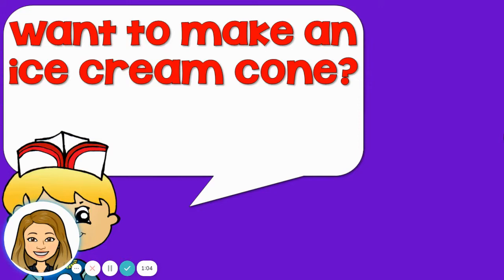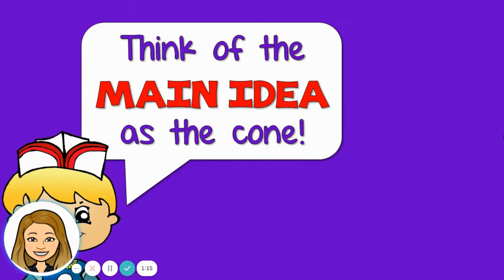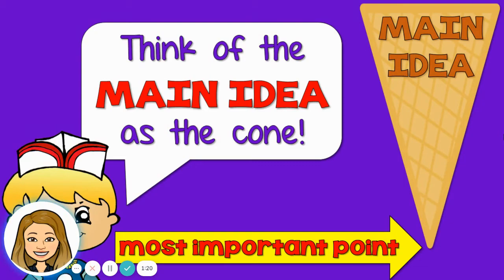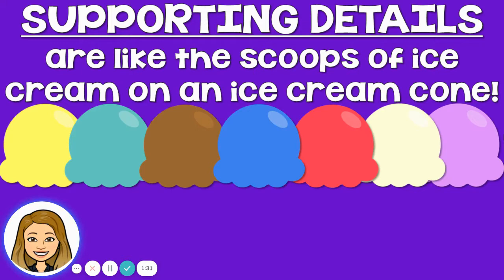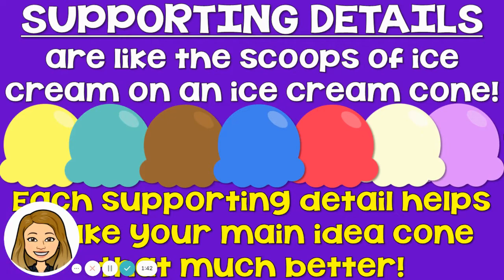Think of an ice cream cone. Would you want to make an ice cream cone with me today? The first thing you need is the cone, and that's like your main idea. So we're going to think of the main idea as the cone — it's the most important part of the story. Think of the supporting details like the ice cream scoops. Supporting details are like the scoop of ice cream on an ice cream cone.